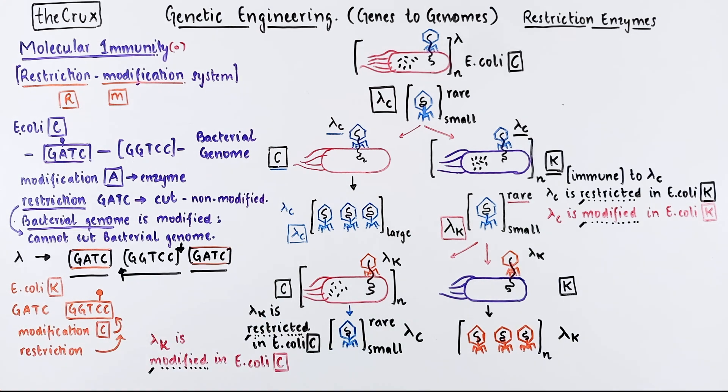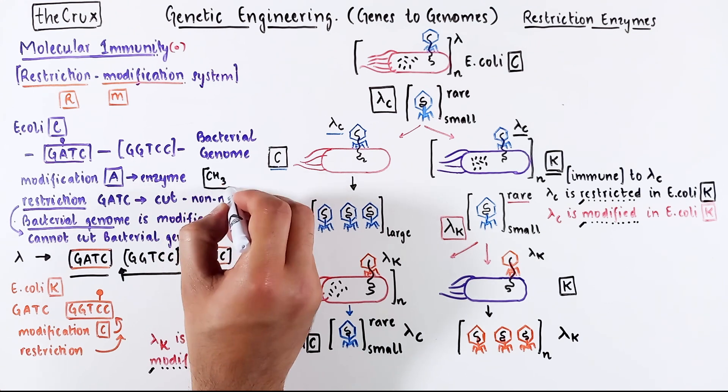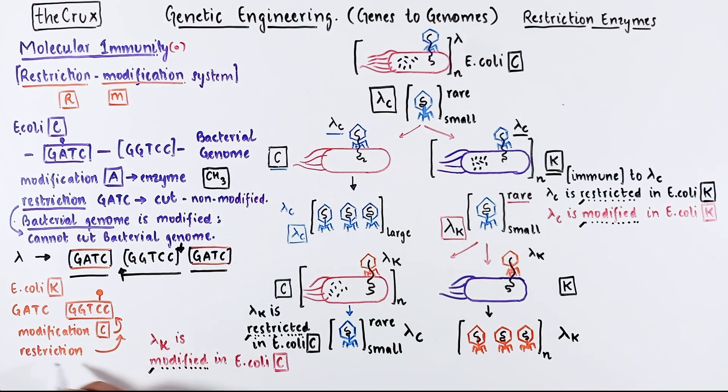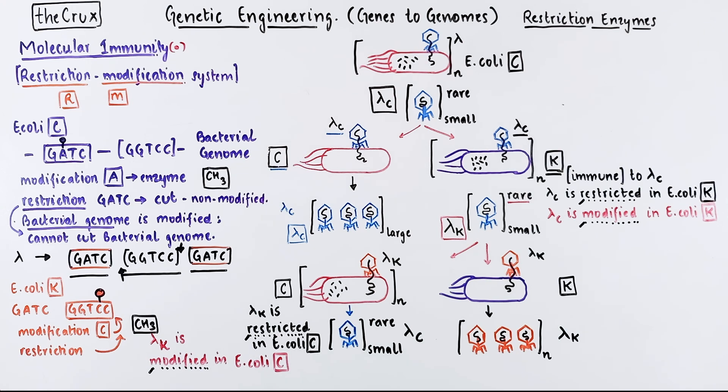One detail I haven't clarified, the modification enzyme is usually adding a methyl group to the specific base. And later in this video and in the upcoming videos, it'll become clear that methylation is the primary if not the only modification. The point being that because of this methyl group at the specific sequence, the restriction enzyme cannot bind it or cut it because of this bulky modification. This however is not a universal truth, but for the sake of this discussion, these are the rules.